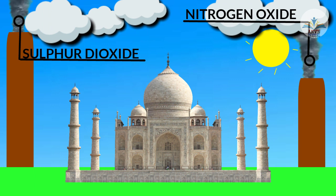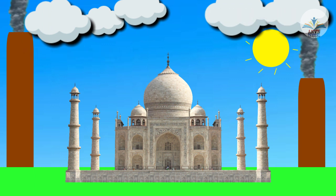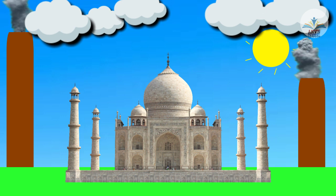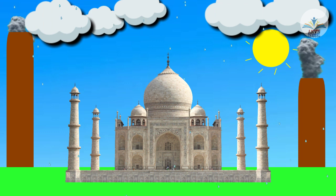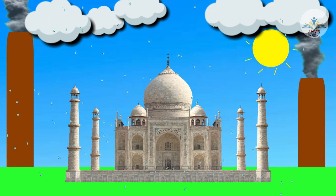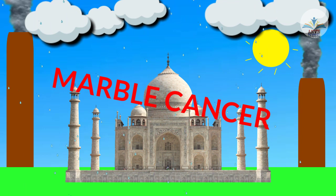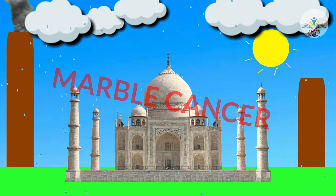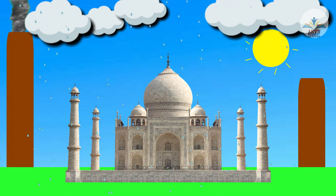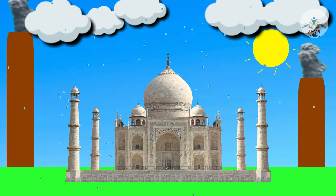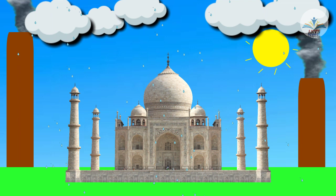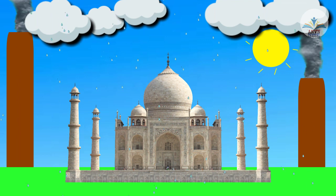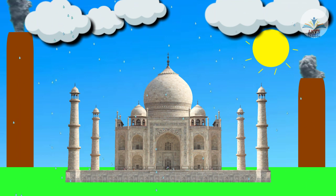These gases react with the water vapor present in the atmosphere to form sulfuric acid and nitric acid. These acids drop down with rain, making the rain acidic. This phenomenon is called marble cancer. Even though the Taj Mahal is affected, and even the plants are affected too, it has now become a serious concern for all to retain its beauty and luster and save it from the effects of pollution.